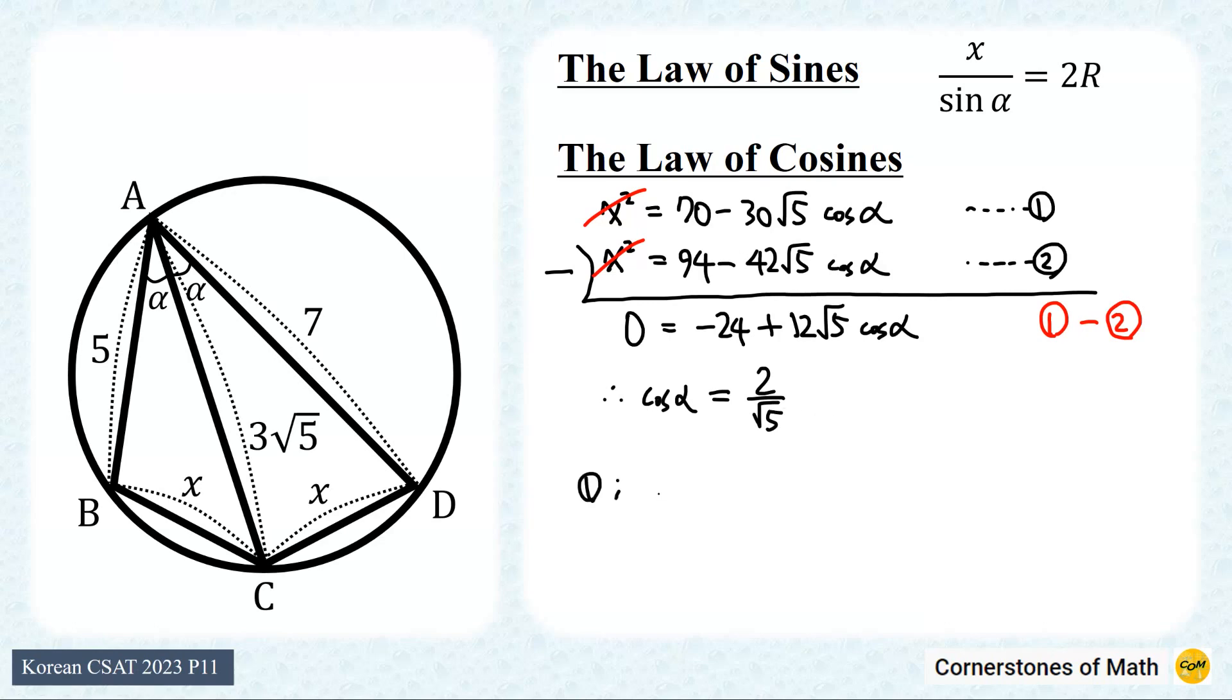Substituting this into equation 1, we obtain x squared equal 70 minus 30 square root of 5 times 2 over square root of 5. So we have 10. And since x is positive, x equals square root of 10.